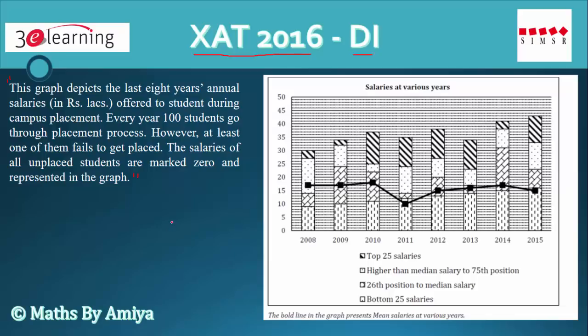This is the placement report of 100 students, so we can say that every year we have 100 students' data. The four lines represent: the bottom 25 salaries, the 26th salary to median salary, salaries higher than median to the 75th position, and the top 25 salaries.